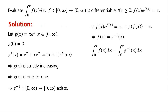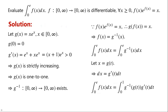Then the integral from 0 to e of f of x with respect to x equals the integral from 0 to e of the inverse function of g of x with respect to x. We will use the substitution method. Let x equal g of t. Then dx equals g'(t) dt. When x varies from 0 to e, t varies from 0 to 1. So the integral equals the integral from 0 to 1 of g⁻¹(g(t)) times g'(t) with respect to t.